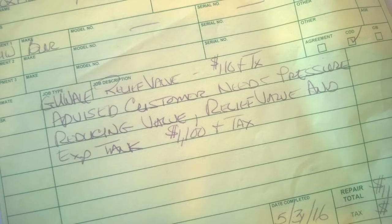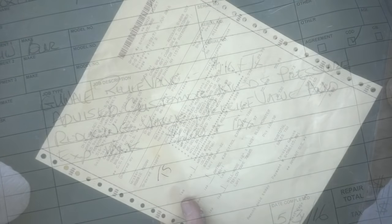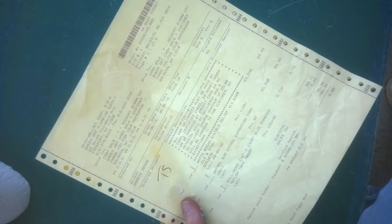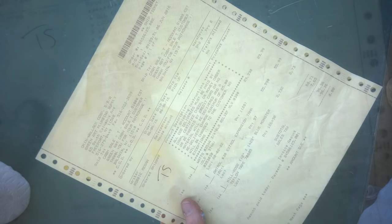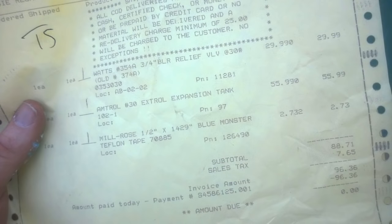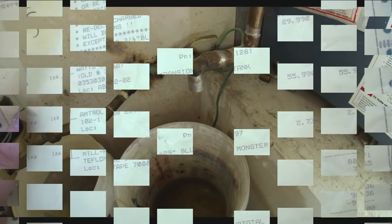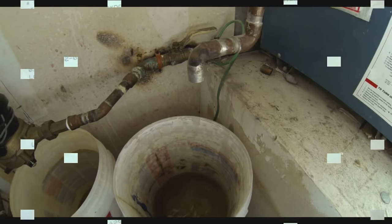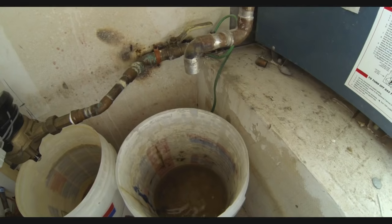I went to a local plumbing supply house, bought the two components that I really needed, which was the overpressure relief valve and the expansion tank. And with tax, I spent, I think it was $96.36. So doing this yourself is very easy and you can literally save hundreds of dollars.